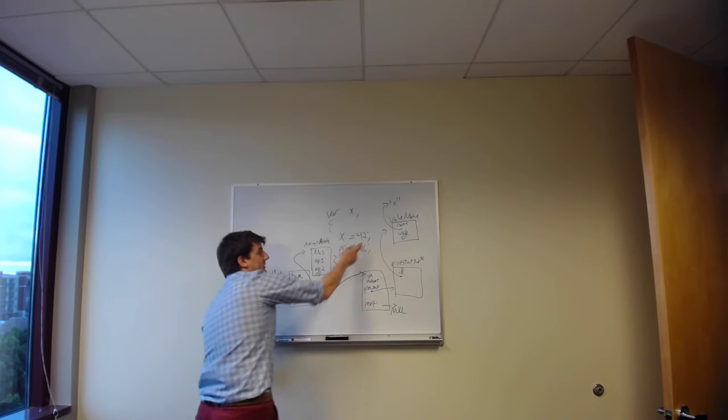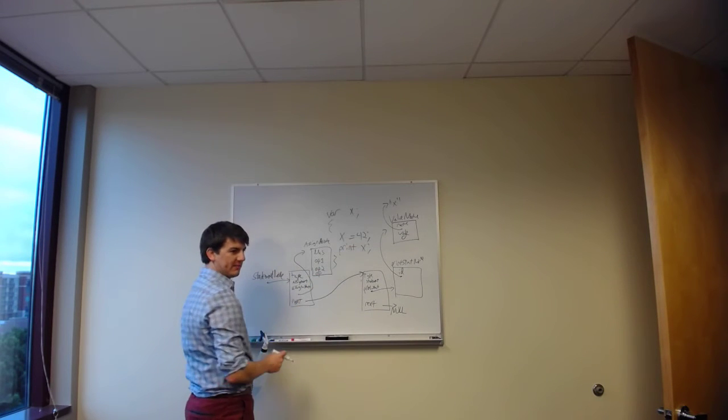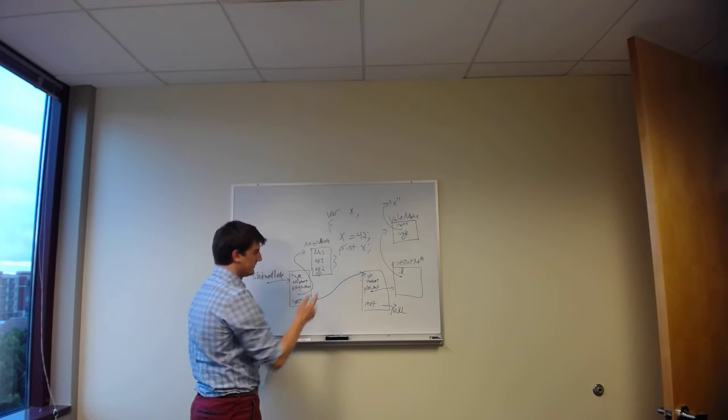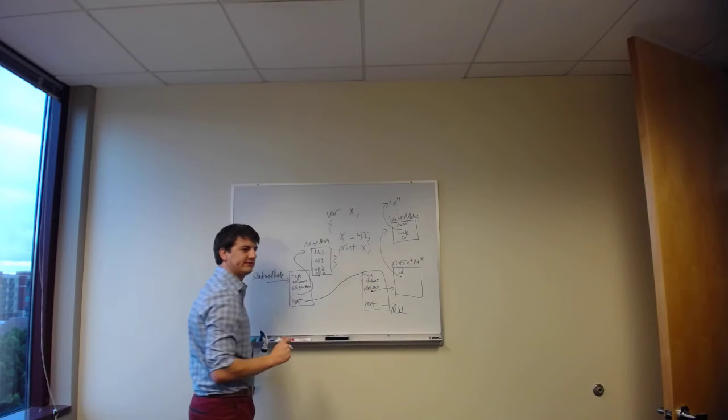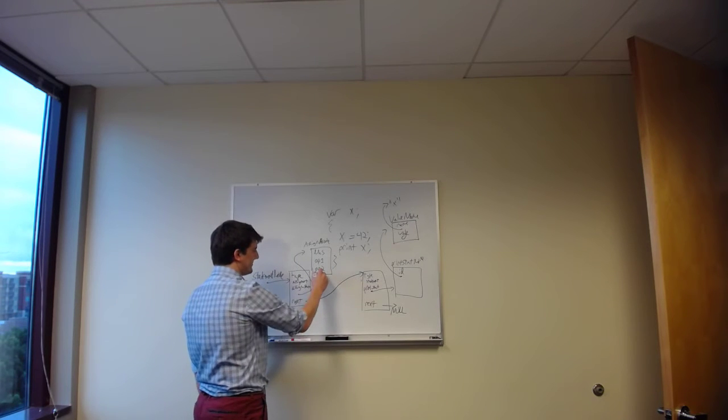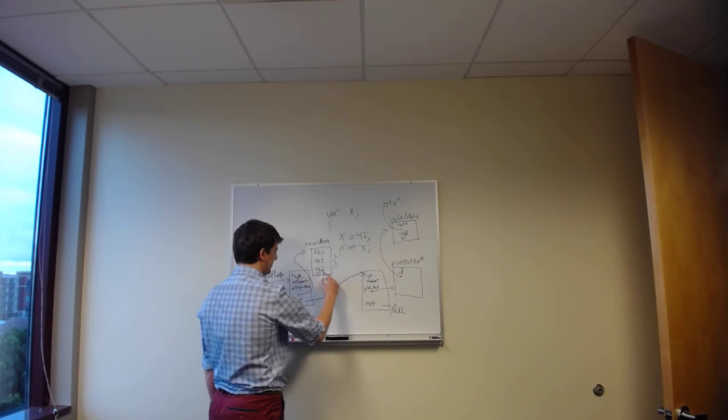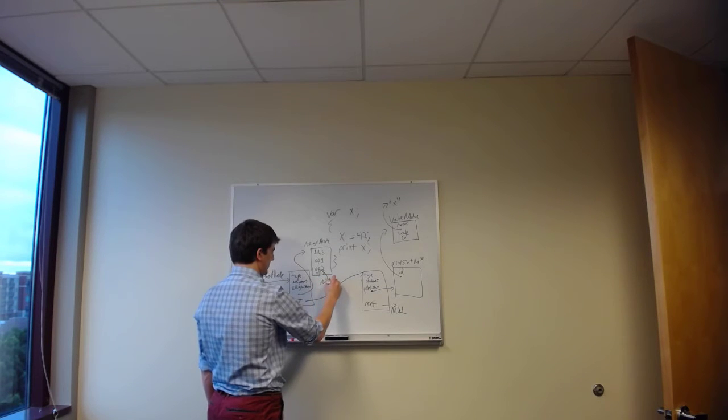So for a simple assignment statement, what would op be? We don't have two operands, so what would op be? Op is equal to 0. So op should be 0. Then op 2 should point where? Null. Should be null, exactly.